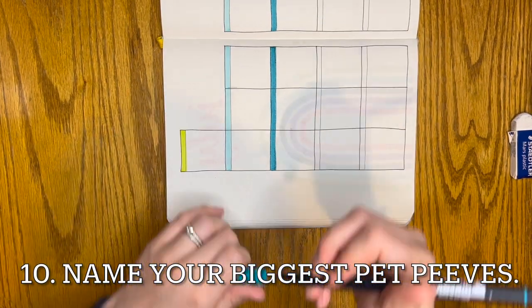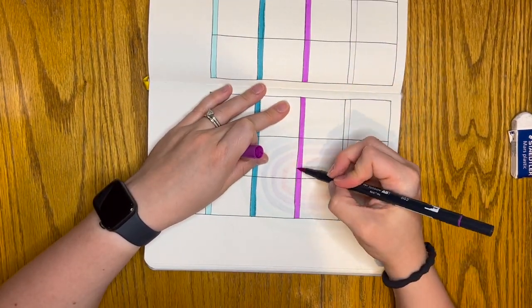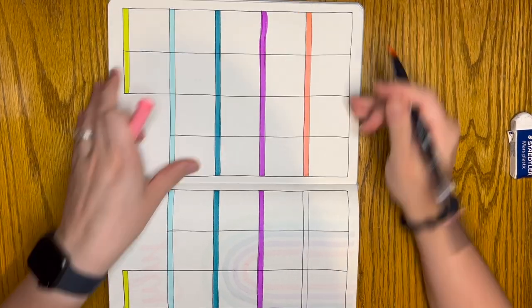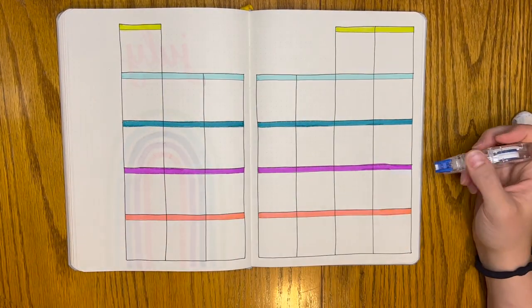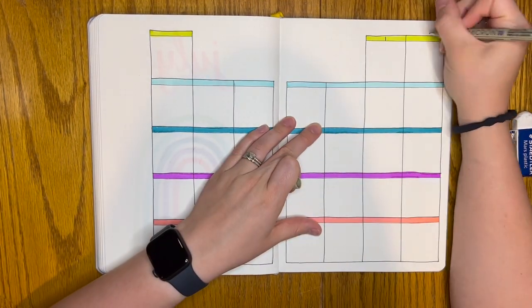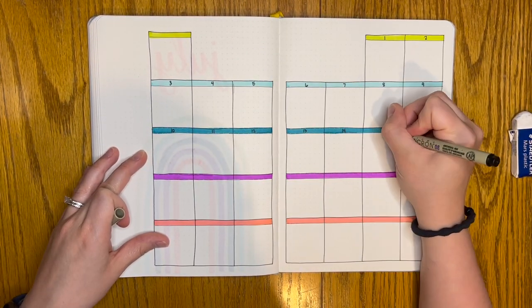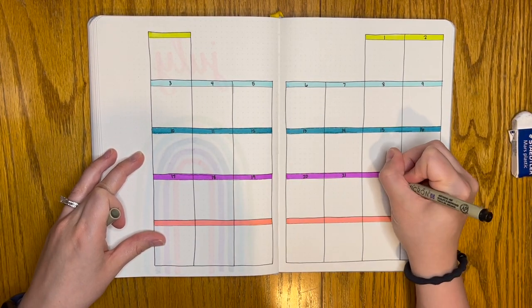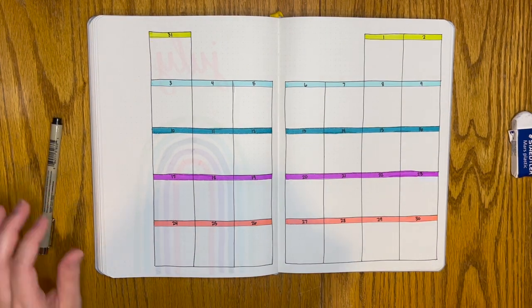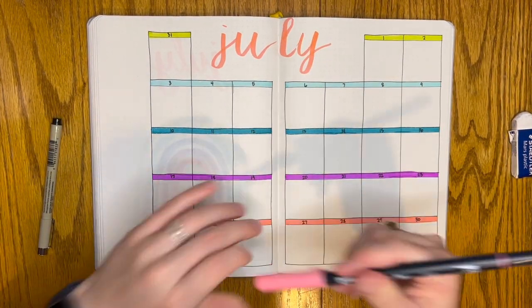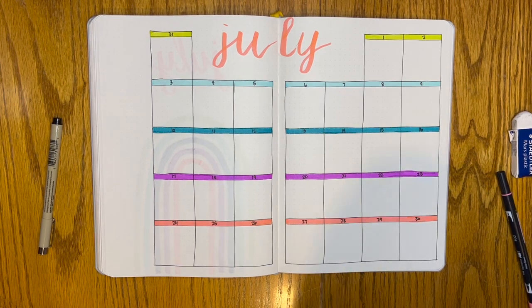Question number ten, name your biggest pet peeves. The first one is a sillier one. The way the toilet paper goes on the roll, it needs to go over. If you put it under, you're wrong. And a more serious one is people who have to one-up every story you tell. So if you're telling something and they need to tell a story that is the same, if not better, than yours, really bugs me. Question number eleven, what book changed your life? The book that changed my life is called Reason to Breathe by Rebecca Donovan. This is the first book that made me stay up all night to read. I don't even remember everything that happens, but it's about a girl who lives with her aunt and uncle and is abused by them. She is working to get away from them after high school. I read it when I was the same age as this character and it just spoke to me. It still resonates with me today. I'd love to go back and read this series and see if it still hits the same.